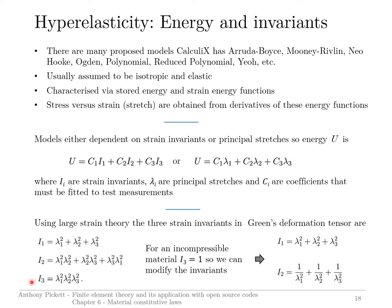We can incorporate the condition for incompressibility — setting the third invariant equal to 1 — into the second invariant, and doing that we end up with this expression here. So we've reduced the problem from 3 invariants to 2 invariants, and then these 2 invariants would be used to calibrate coefficients between your selected model and your test measurements.